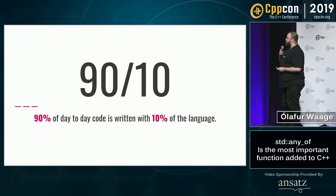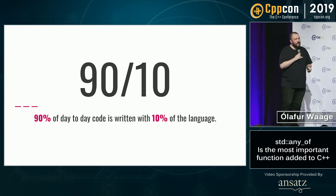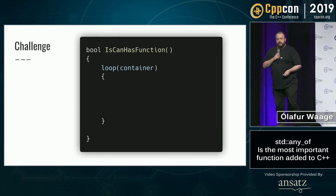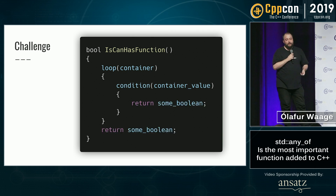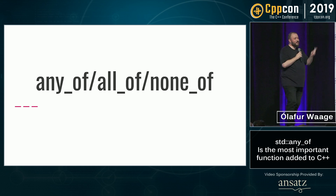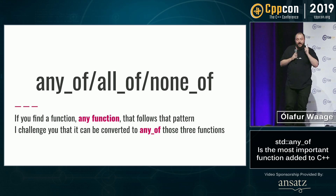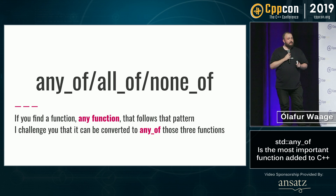The 90-10 rule applies: 90% of day-to-day code is written with 10% of the language. So here's my challenge to you. You have a function with some sort of loop through some sort of container, some sort of condition on the value in the container, and then you return a Boolean — that is one of those three. My challenge to you: if you find any function that follows that pattern, you can convert it. I challenge you. Here's the regex for it.